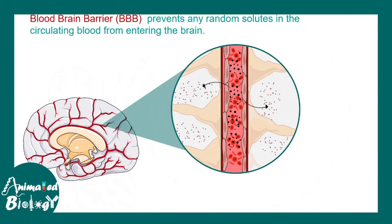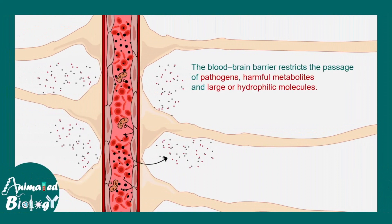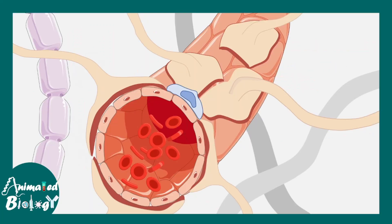Astrocytes also help form the blood-brain barrier. Inside our brain there are many blood vessels, but not everything in the blood can reach our brain because there is a selectivity filter — the blood-brain barrier. It prevents random solutes circulating in the blood from entering the brain. The blood-brain barrier restricts the passage of pathogens, harmful metabolites, and large hydrophilic molecules, while allowing selective permeabilization of certain substances such as glucose and other molecules absolutely essential for the brain.